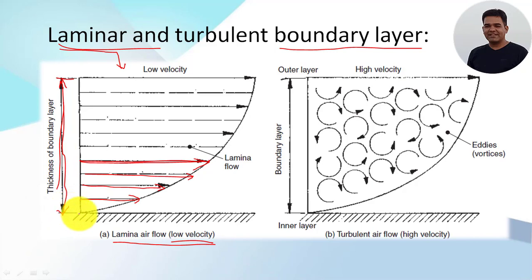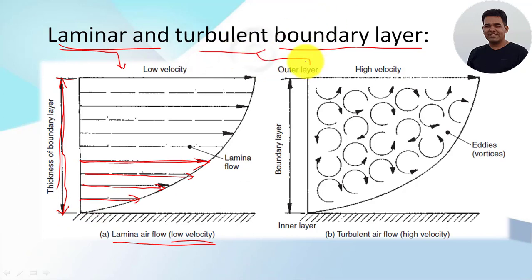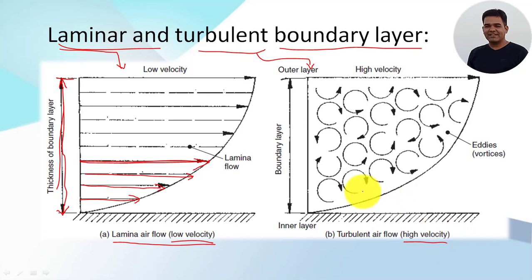It is known as the thickness of the boundary layer. Now, in the case of a turbulent boundary layer, we can observe in the figure that it is generated due to high velocity. As the velocity of the moving fluid is quite high,